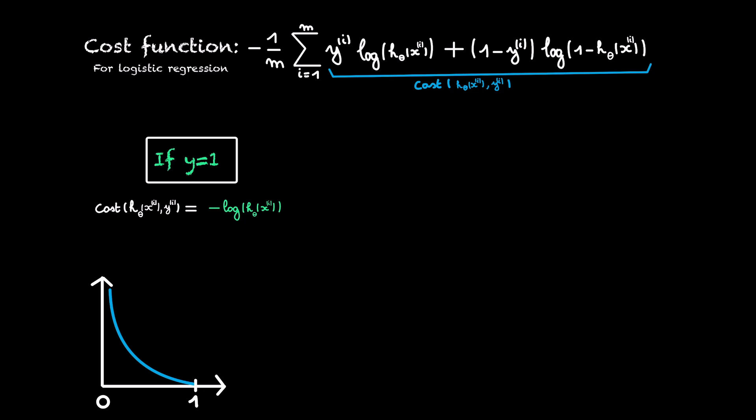In this case, when our hypothesis also predicts 1, our learning algorithm gave the correct answer and the cost is 0.